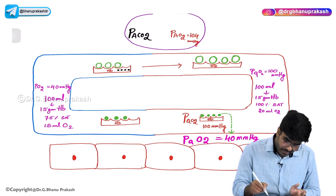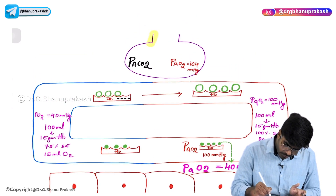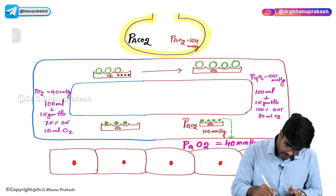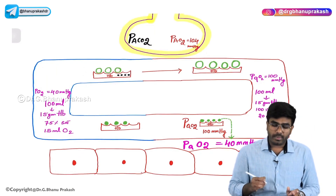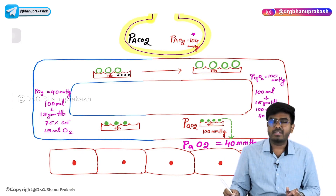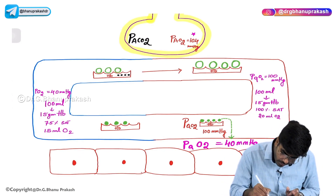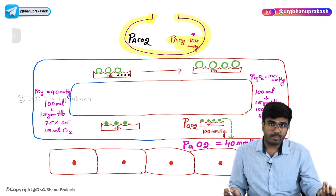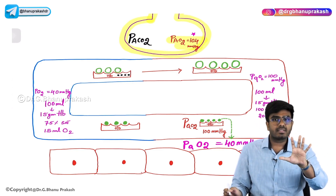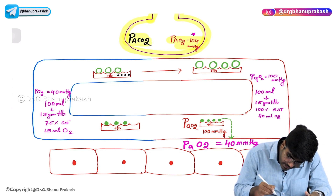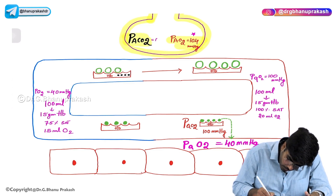Here is your alveolus. The partial pressure of oxygen in the alveolus is 104 mmHg, or roughly 100 mmHg in a round figure. The partial pressure of carbon dioxide in the alveolus should be taken as negligible — approximately zero.